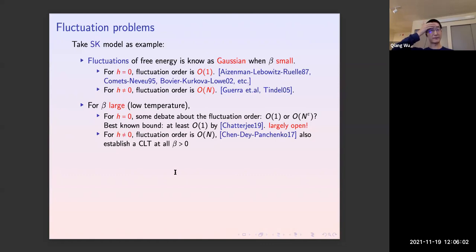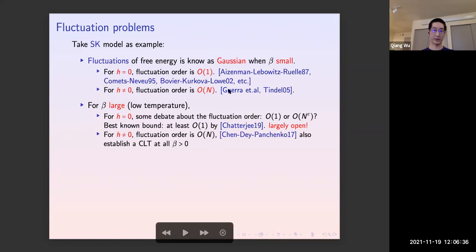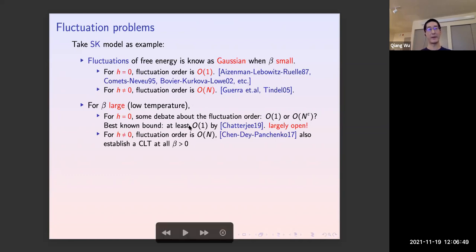I'll briefly mention historical developments on the fluctuation question. For the SK model, the fluctuation of the free energy has long been known to be Gaussian in the high temperature regime when beta is small. For h equal to zero, the seminal paper by Aizenman, Lebowitz, and Ruelle used cluster expansion to prove the fluctuation order is Gaussian, with results extending up to the critical temperature. For h not equal to zero, the log partition function has linear-order fluctuations that obey a central limit theorem, proved by Guerra and Toninelli in 2002.